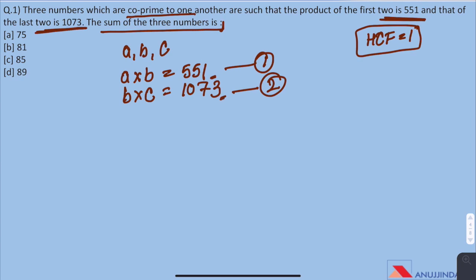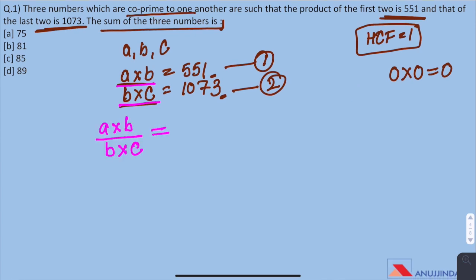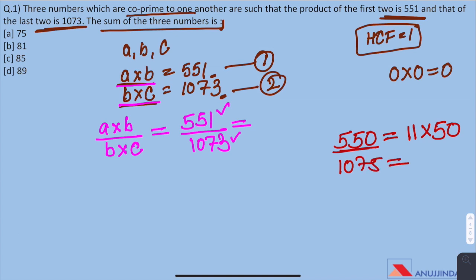As we see both of them are odd numbers, we know one thing for sure that odd number multiplied by an odd number gives an odd number. All three of them have to be odd numbers and they are co-prime as well. On dividing equation 1 by equation 2, we get A/C = 551/1073. Now we have to find the factors of both of these. As on first look, we cannot easily find the factors of 551 and 1073, we will try and find the factors of the nearest number which is 550 in case of 551, which is 11 into 50, and 1075 in the case of 1073, which is 25 into 43.